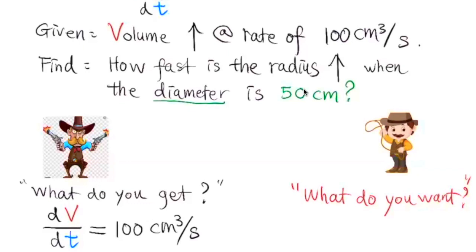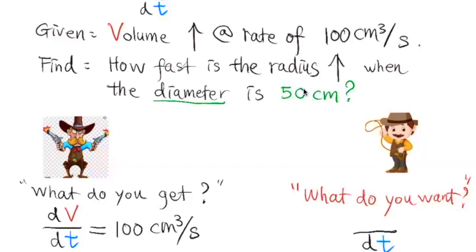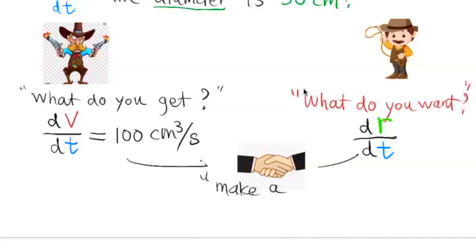What do we want to find in this problem? We want to find how fast the radius is increasing when the diameter is 50 cm. Whenever you see 'how fast,' that refers to a rate of change with respect to time t. So we are looking for dR/dt.